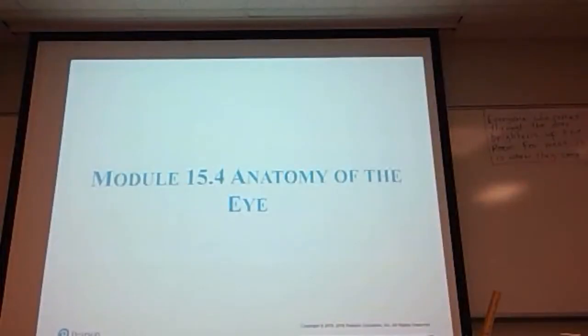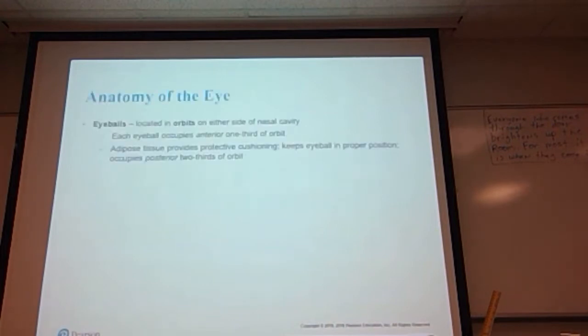Let's continue with the special senses and talk about the sense of vision, starting with the anatomy of the eye. Your eyeballs are located in the orbits on either side of the nasal cavity. Each eyeball occupies the anterior one-third of the orbit.